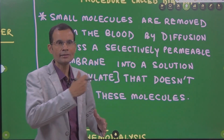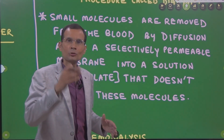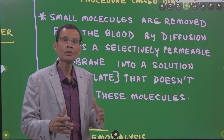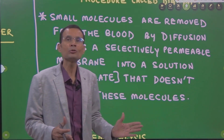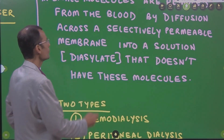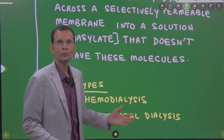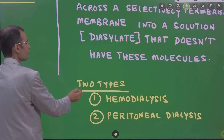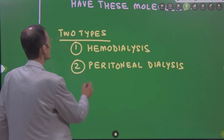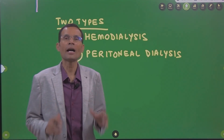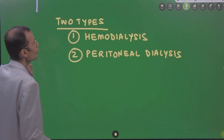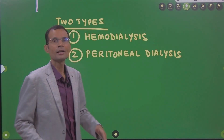Blood flows through the dialysis machine. Small, low molecular weight substances will diffuse through the semi-permeable membrane into the dialysate solution, which does not initially contain these molecules. Intermittently, that solution can also be changed. There are two types of dialysis: one is hemodialysis and the other is peritoneal dialysis.